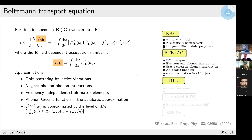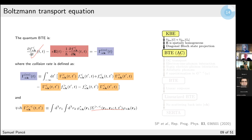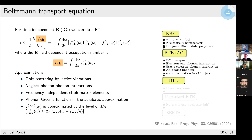If we further assume DC transport — no time dependence — the first term vanishes, leaving two terms. On the left-hand side is the change with respect to occupation, and because we are now time-independent, we can do a Fourier transform and recast in terms of frequency. We define the occupation function as the frequency integral of the lesser generalized occupation function, which is the occupation function for state n and momentum k in the presence of an electric field.